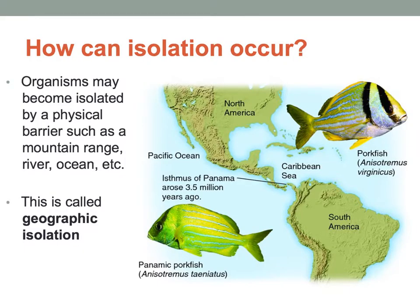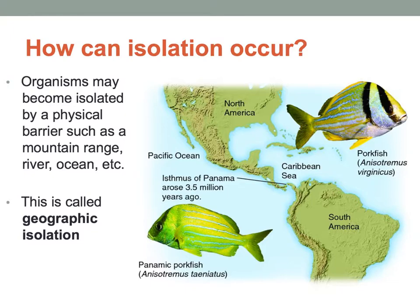One type is geographic isolation. Before part of the South American continent fused together, there was a gap where fish could co-mingle. But once a land bridge formed and sealed off the waterway, the fish were physically separated and could no longer co-mingle. Geographic isolation is the physical separation of a species due to a mountain range, a river, an ocean, or some other physical barrier that prevents mating. Over time you end up with two different species.